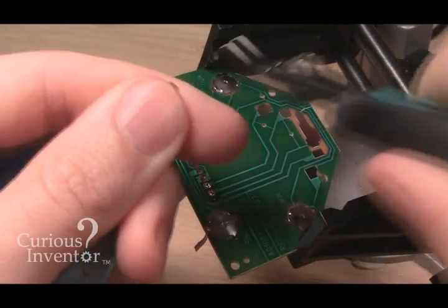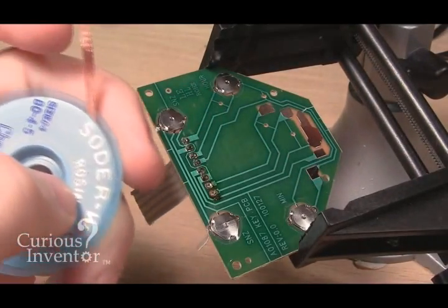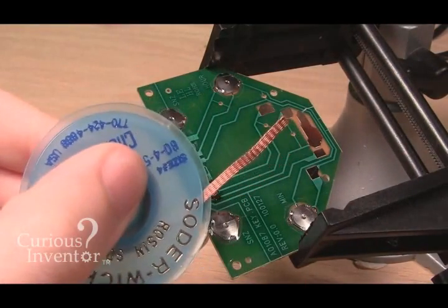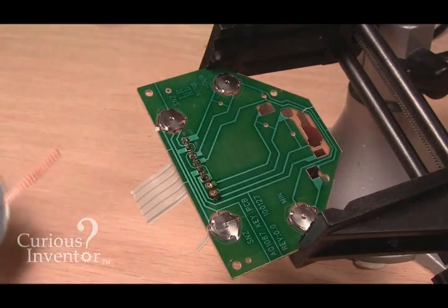To desolder a joint, first cut off any used portion of the wick. And when you use the wick, be sure to hold it by the bobbin, as heat transfers quickly through the copper.